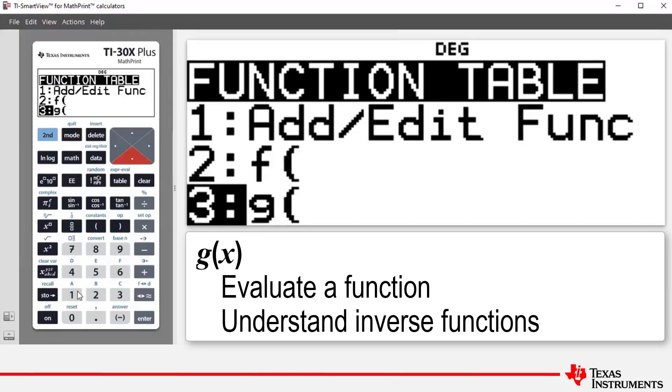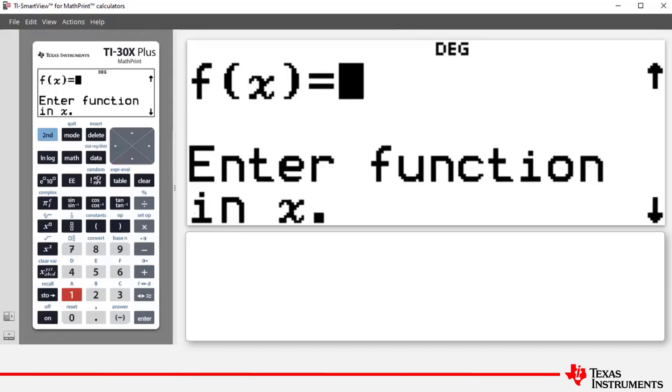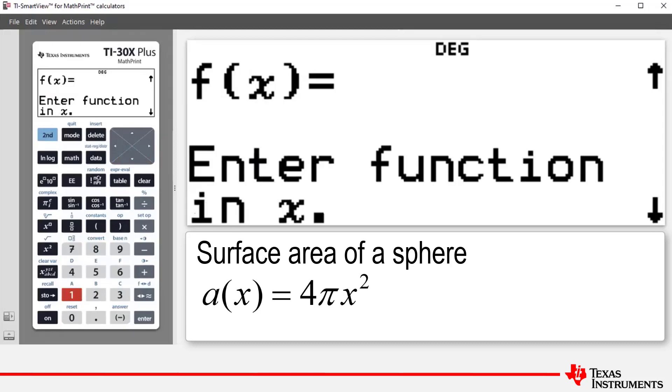We're going to press number one to add a function. Now the function we're going to introduce is from our example. The example is the surface area of a sphere is given by the function a(x) = 4πx² where x is the radius and is greater than zero, and we're going to use the function table to calculate the surface area of the following spheres.